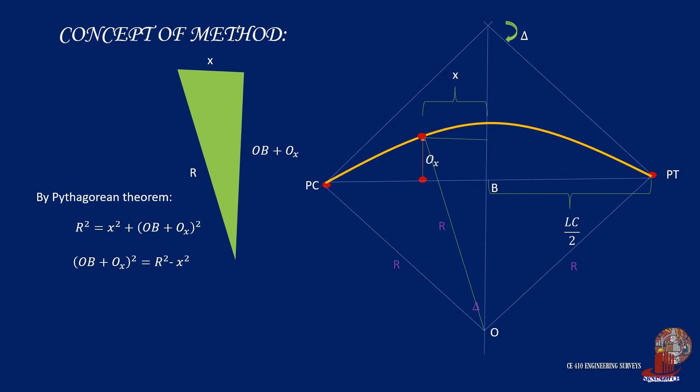Since the required is OX, factor out the side including OX to have the square of the radius less the square of X. Take the roots to free OX and we arrive at the root of R squared minus X squared minus OB.